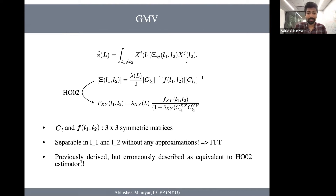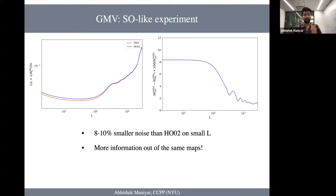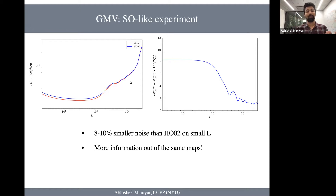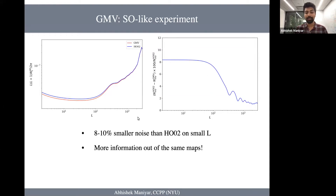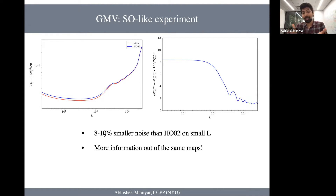The form of phi_{GMV} looks like this, where each weight F_{TT}, F_{EE}, and others are determined such that the whole equation has the minimum variance — instead of determining them one at a time as in Hu-Okamoto. Another thing to notice is that in its original form, GMV is separable in L₁ and L₂ without making any approximations, so you can use fast Fourier transforms to speed up the calculations. This was previously derived in some papers but was erroneously described as being the same as the Hu-Okamoto estimator, which is not the case. For a Simons Observatory-like experiment, the GMV reconstruction noise is smaller than the Hu-Okamoto noise by eight to ten percent. Basically, you're getting more information out of the same maps, just using a slightly more intelligent technique.